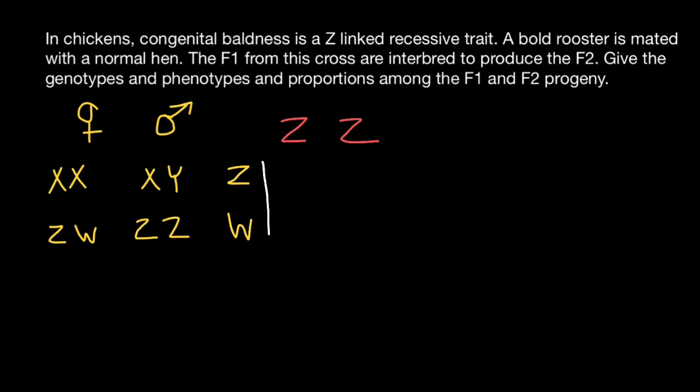Let's build a Punnett square and take a look at what's going to happen with the progeny, the genotypes and phenotypes in the F1 generation. Defective Z chromosome from the male and normal Z chromosome from the female. Defective Z chromosome here, here, and here. Normal Z chromosome from the female, and W here and here.